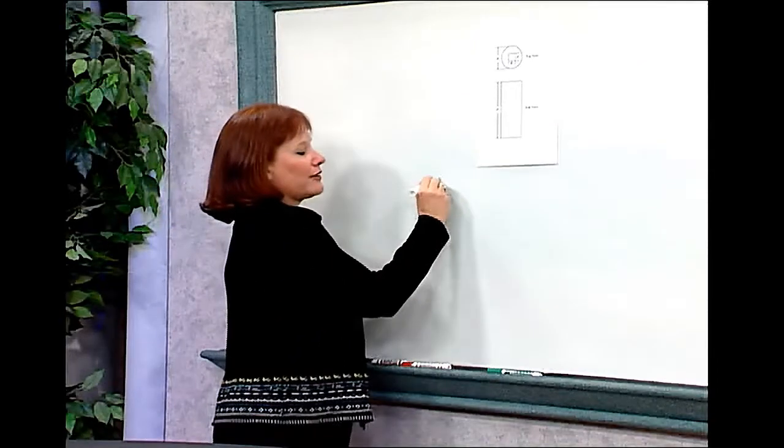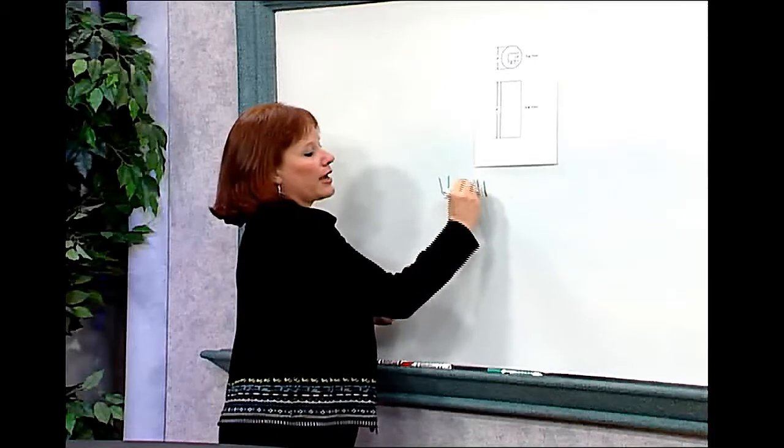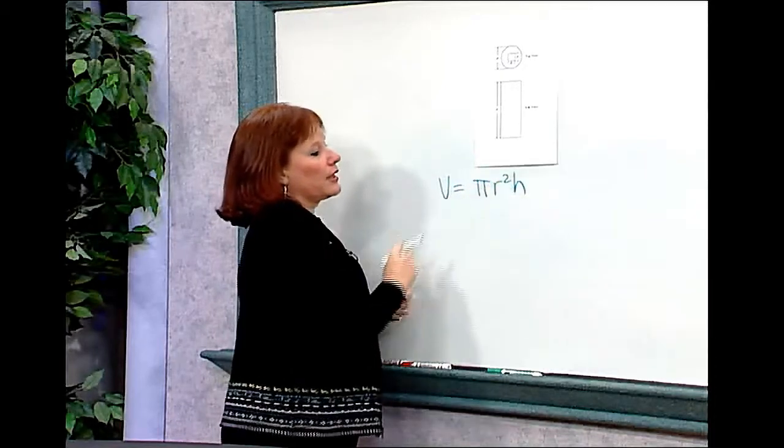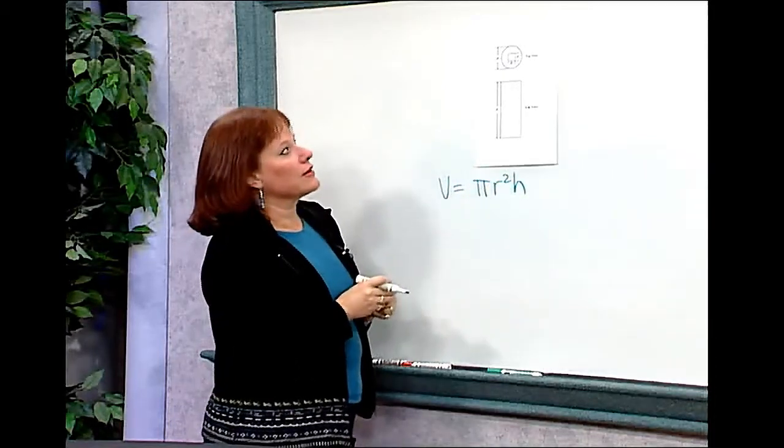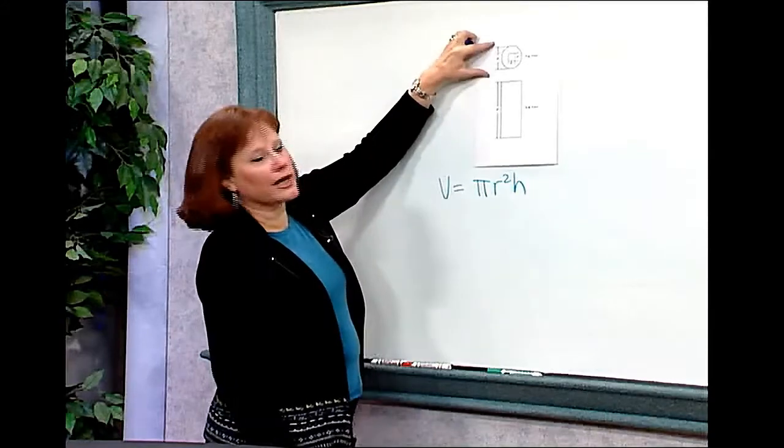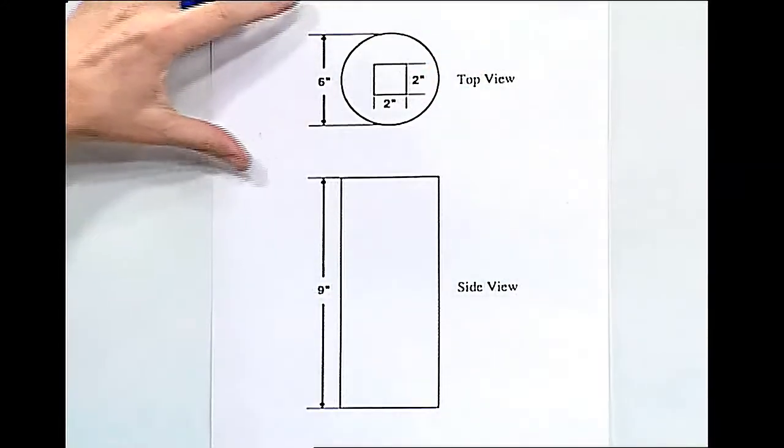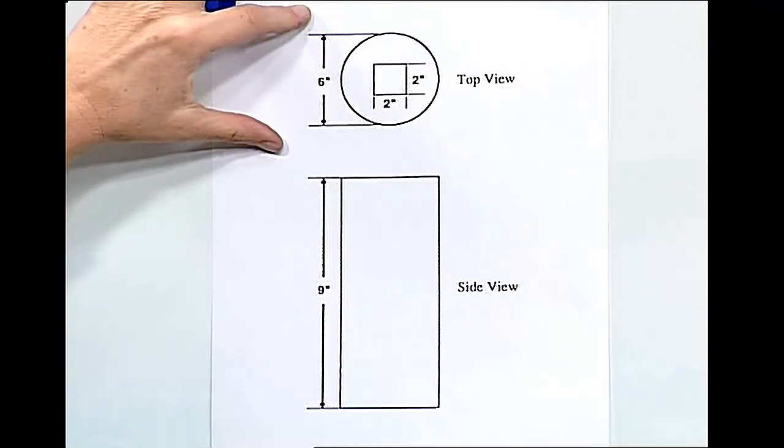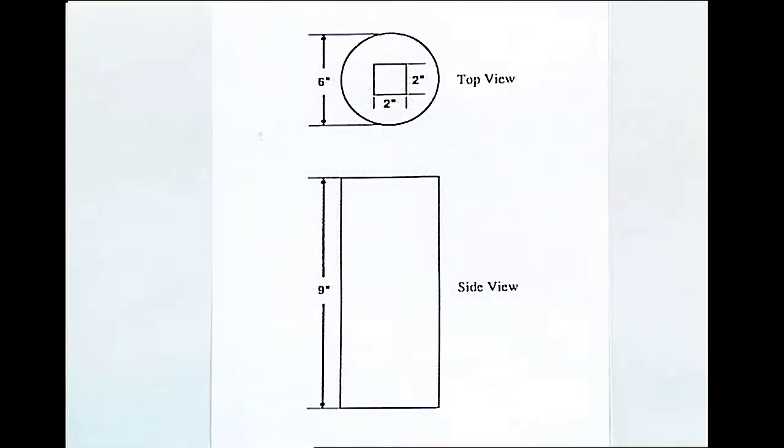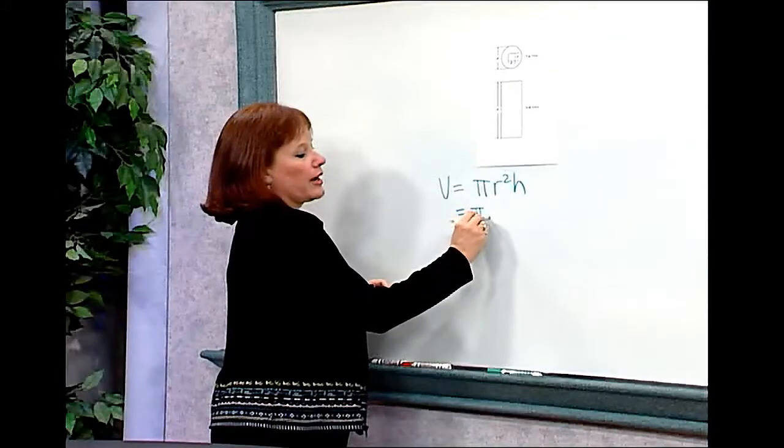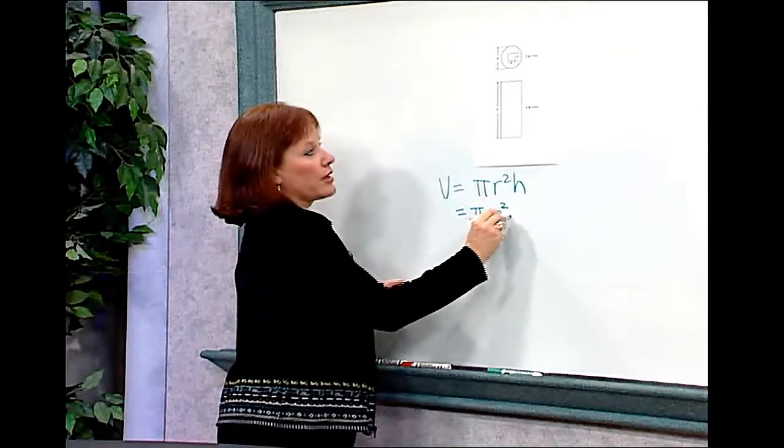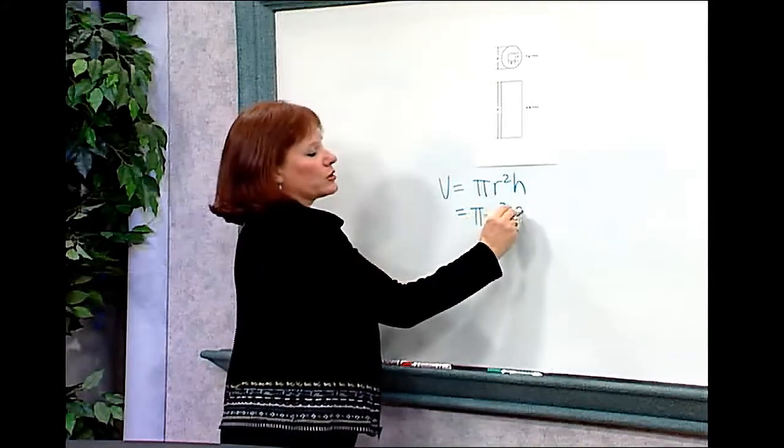I know if I'm finding the volume of a cylinder, I need to use the formula pi r squared h. Now in this case, I'm not given the radius readily. I'm given the diameter, but it's not hard to find. I know if the diameter is 6, the radius is half as long or 3. So the volume of this particular piece would be pi times 3 squared times the height of the figure, which is 9 inches.